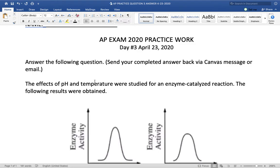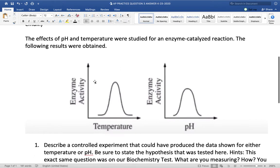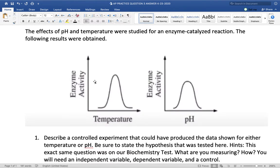Number three, day three. The question was, the effects of pH and temperature were studied for an enzyme-catalyzed reaction. The following results were obtained. Describe a controlled experiment that could have produced the data shown for either temperature or pH.